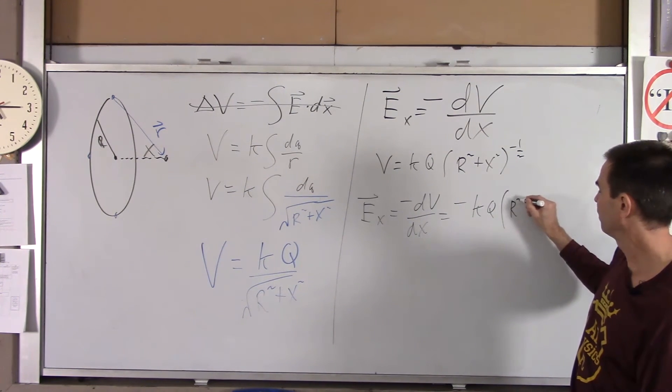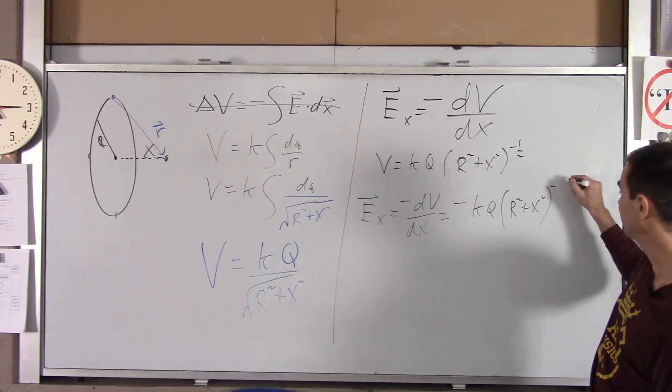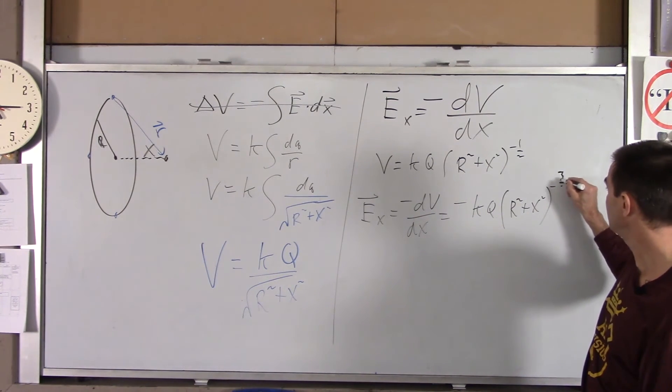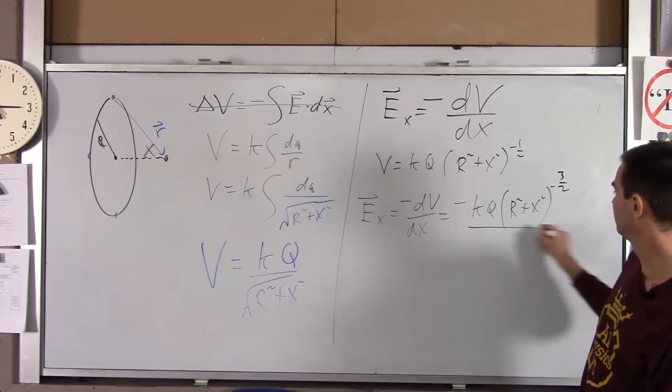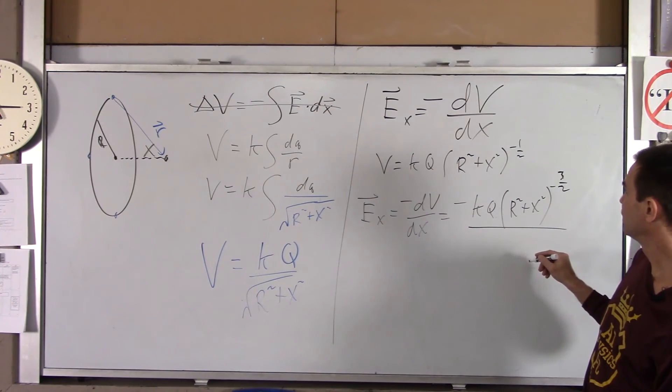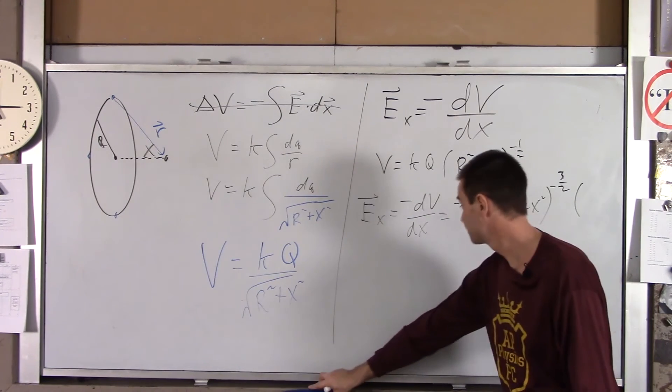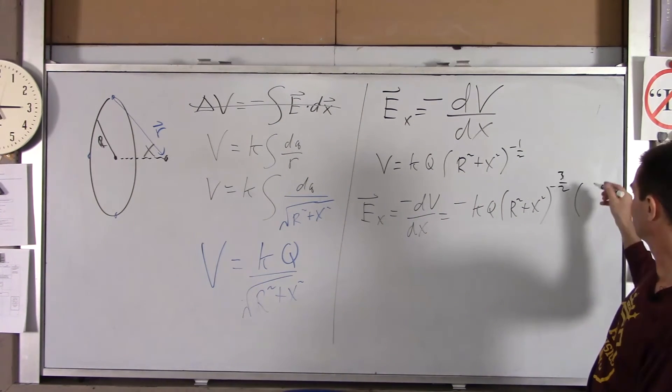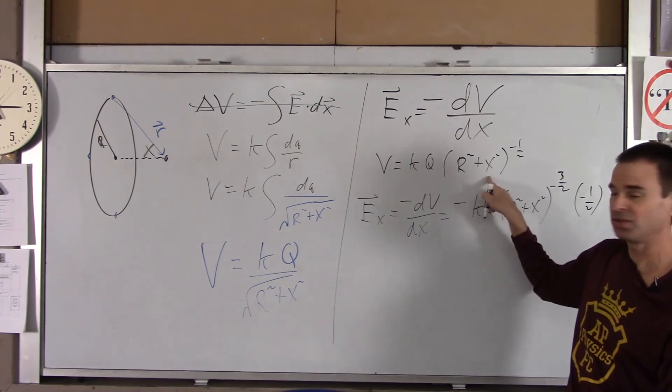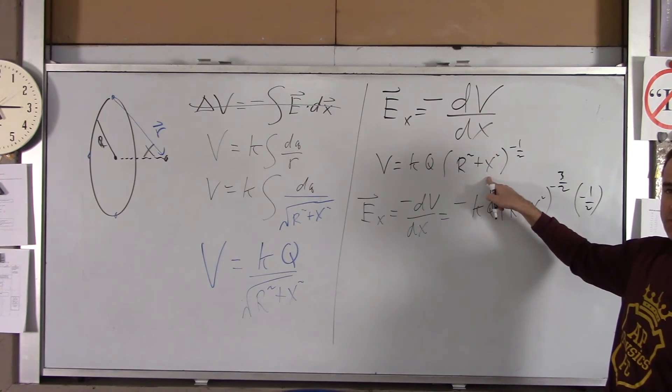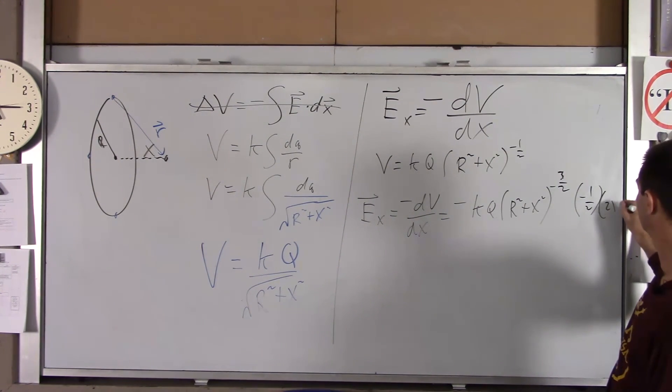You do the power rule on this. So, you do R squared plus X squared to the negative. You subtract one from that, negative three-halves, all over. Oh, and then times, sorry, not over, but times this, which is negative a half, and then times the derivative of the inside of this with respect to X, which is simply 2X.